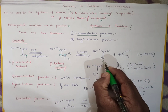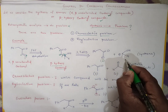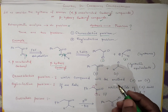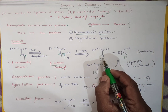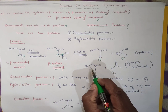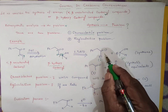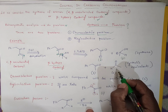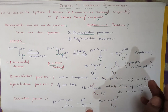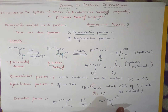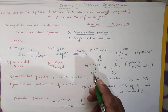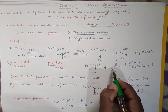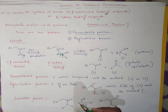There are two synthons we are getting — 1 and 2. Now, what are the synthetic equivalents for this? Here a minus charge is there; just add one hydrogen and you will get a compound. So this is one synthetic equivalent of this synthon, and the synthetic equivalent of this synthon is a simple aldehyde. But here we come across a chemoselective problem.